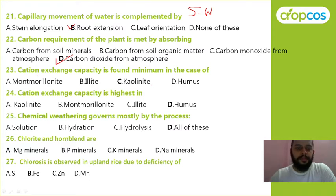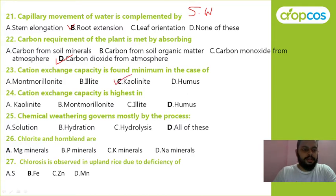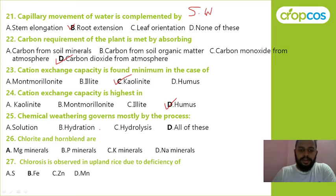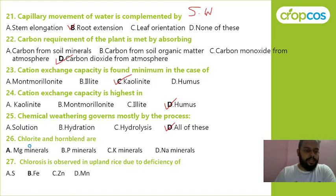Cation exchange capacity is found minimum in case of montmorillonite, illite, kaolinite, or humus? Next: cation exchange capacity is found highest in kaolinite, montmorillonite, illite, or humus? Correct answer is humus. Chemical weathering is governed mostly by soil solution, hydration, hydrolysis, or all of these? Correct answer is all of these. Chlorite and hornblende are magnesium minerals — correct answer is magnesium mineral.